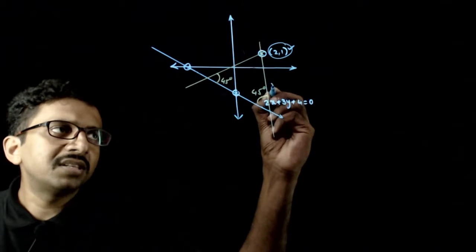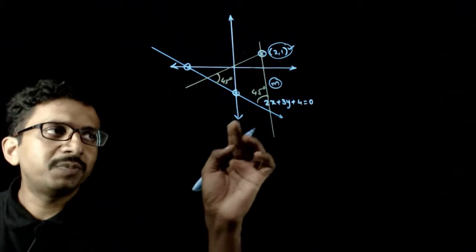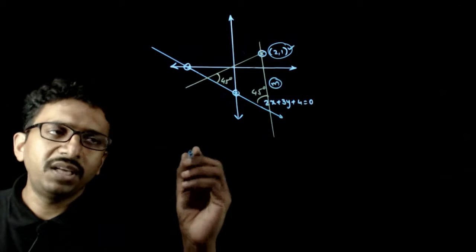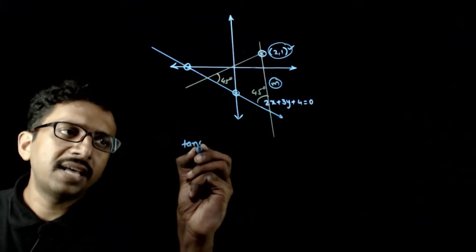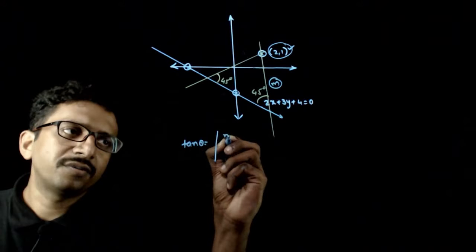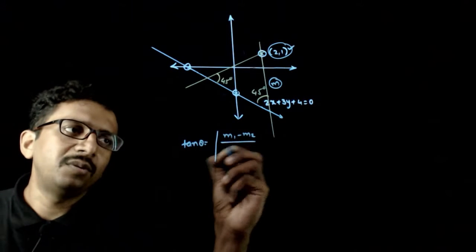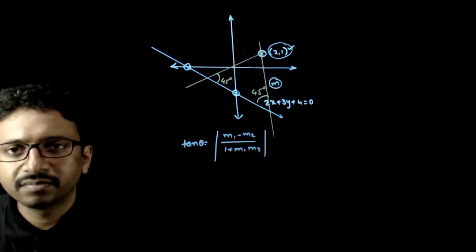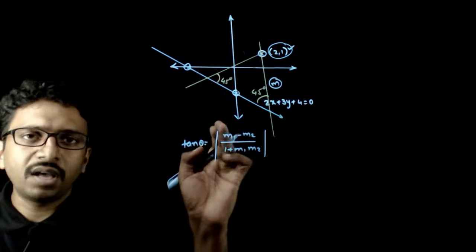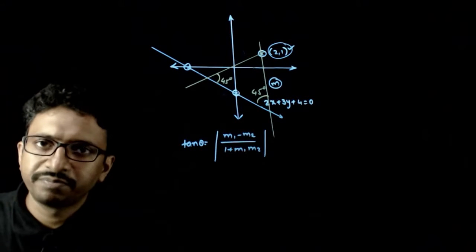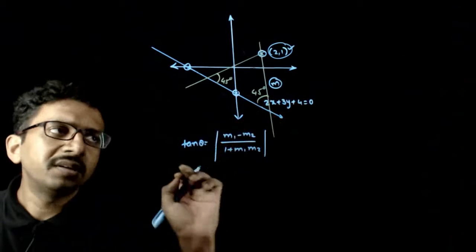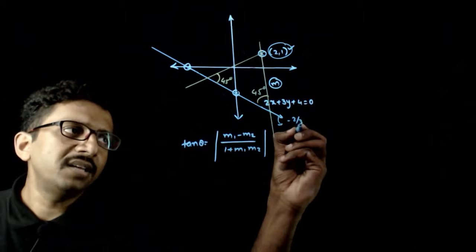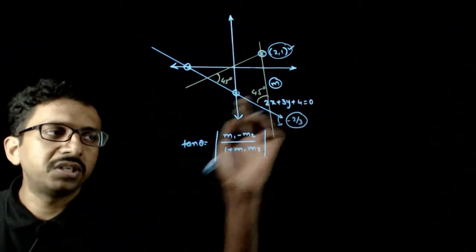Let us say that m is the slope of the line which makes an angle of 45 degrees with this line. So tan theta should be equal to the formula: tan theta is equal to mod of m1 minus m2 by 1 plus m1 m2. Now one slope is m, and the other slope is the slope of this line which is minus 2 by 3 — minus of x coefficient by y coefficient.